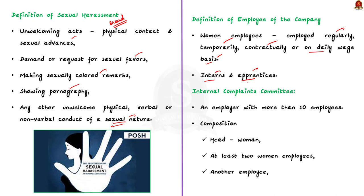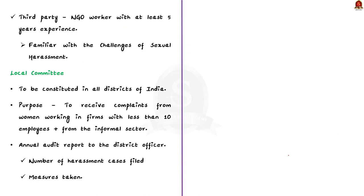The POSH Act 2013 mandates an employer with more than 10 employees to form an Internal Compliance Committee. This committee will be approached by the aggrieved woman in case of sexual harassment. The Internal Compliance Committee has to be headed by a woman and should have at least two women employees. Apart from this, a third party such as an NGO worker with at least five years' experience and familiarity with the challenges of sexual harassment must also be included. The act also mandates all districts to create a Local Committee to receive complaints from women working in firms with less than 10 employees and from the informal sector.